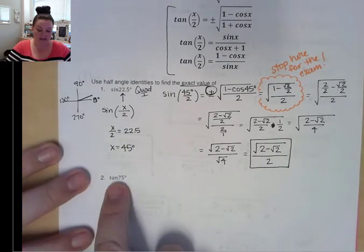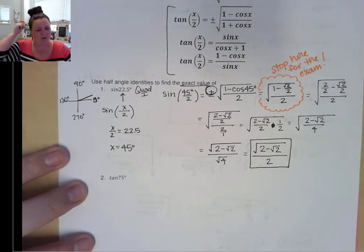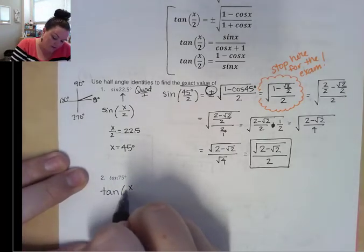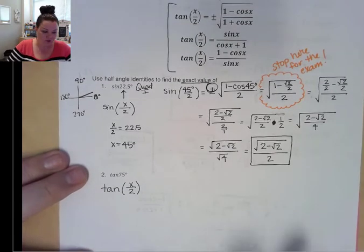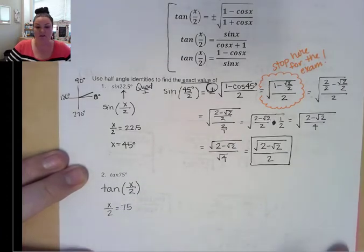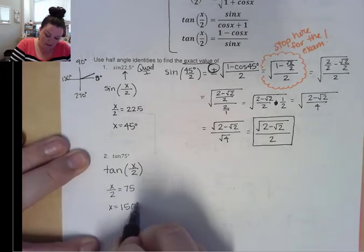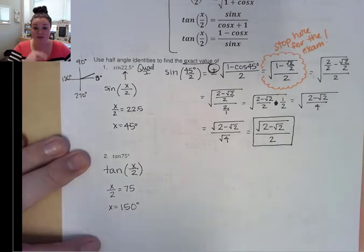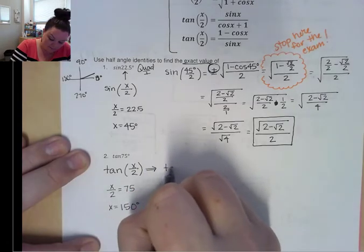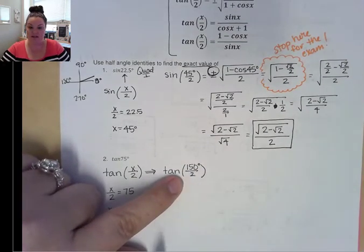Let's look at another one: tangent of 75 degrees. 75 is not a standard reference triangle angle. So I ask: if I double that angle, is it a nice angle? If x over 2 equals 75, then x equals 150 degrees. And 150 degrees is a standard reference triangle value. So I'll write this as tangent of 150 over 2.